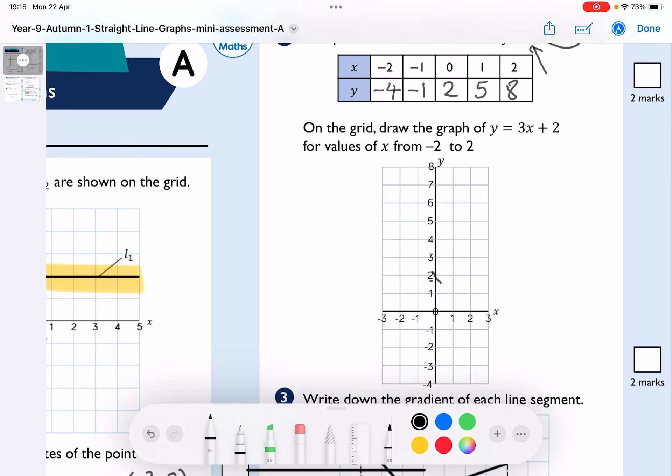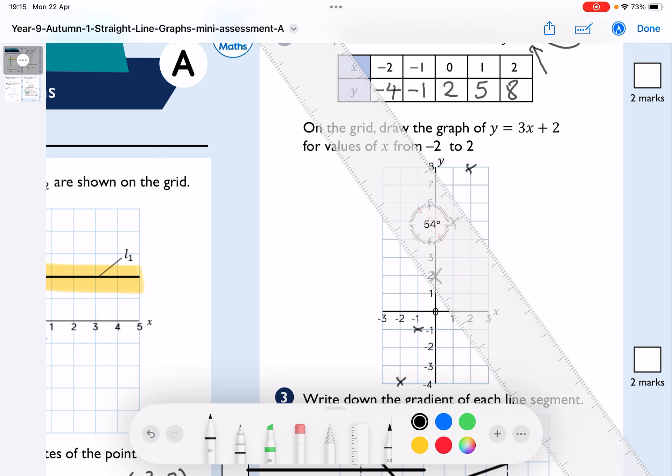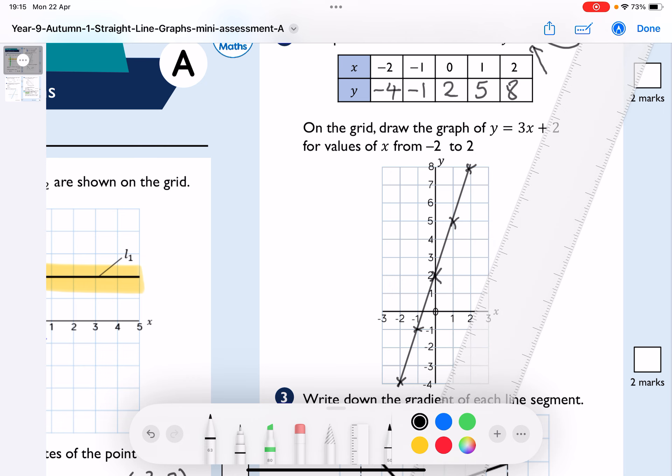So 0, 2, 1, 5, 2, 8, negative 1, negative 1, negative 2, negative 4, like so. And what you would then do is get your ruler, turn your ruler around so that it goes through all of the points, like so. And then draw your line straight through. Okay, so that's that question. Great.